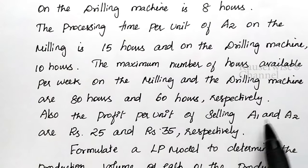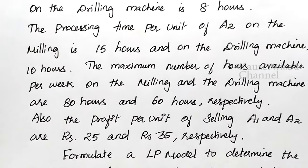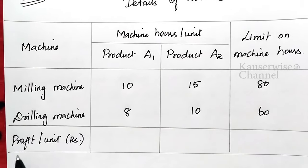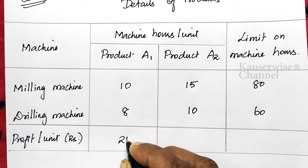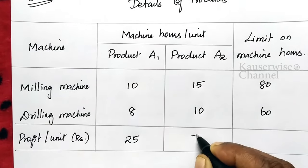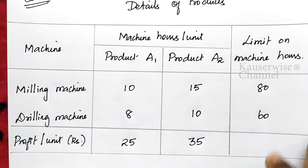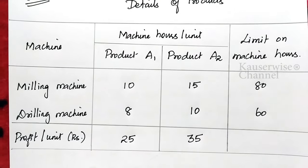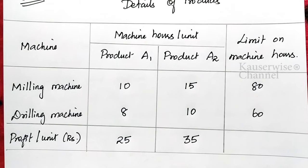The profit per unit of product A1 is 25 rupees per unit and for A2 it is 35 rupees per unit. These are the informations given in the problem, and based on this information we can easily construct the table.